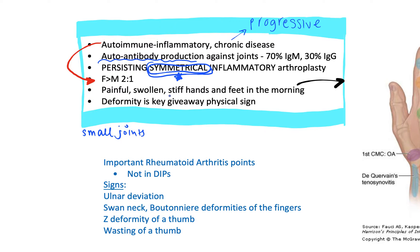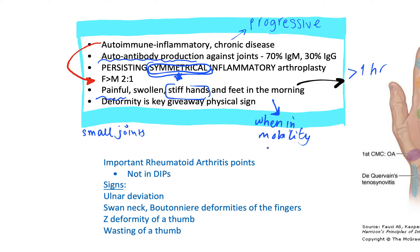Painful, swollen, stiff hands and feet in the morning are a classic sign of rheumatoid arthritis. This morning stiffness typically lasts for more than one hour. The reason is that the joints get better with mobility — they are less stiff when moving. They improve through the day, but when the patient wakes up in the morning they feel stiffness again. Also look out for deformity, as it is a key giveaway physical sign you do not want to miss on examination.